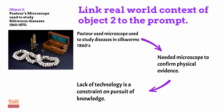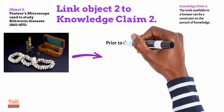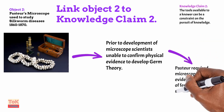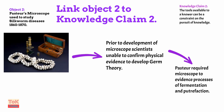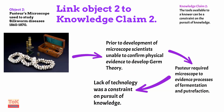Linking object two to knowledge claim two — that the tools available to a knower can be a constraint on the pursuit of knowledge, tools meaning technology in this case. Prior to the development of the microscope, scientists had been unable to confirm the physical evidence for germ theory. But Pasteur had a microscope developed to a sufficiently sophisticated level that he was able to study processes such as fermentation and putrefaction to develop germ theory. Because prior scientists were not able to do that, object two demonstrates that a lack of technology can be a constraint on the pursuit of knowledge.